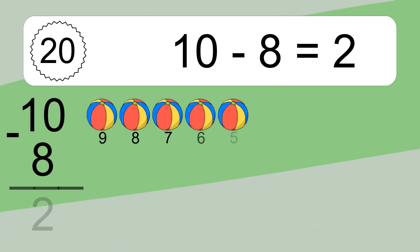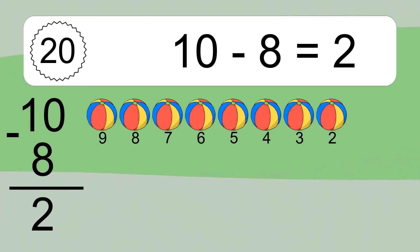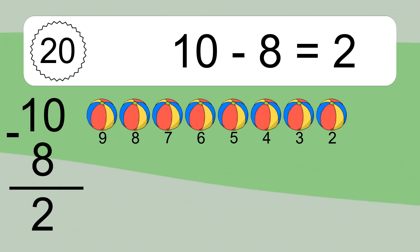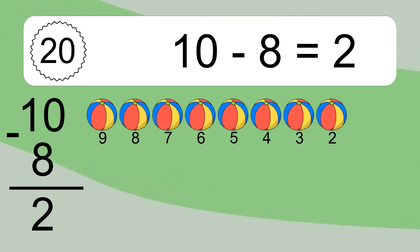10 minus 8 equals what? 10 minus 8 equals 2. Let's count it: 9, 8, 7, 6, 5, 4, 3, 2. Let's count it.